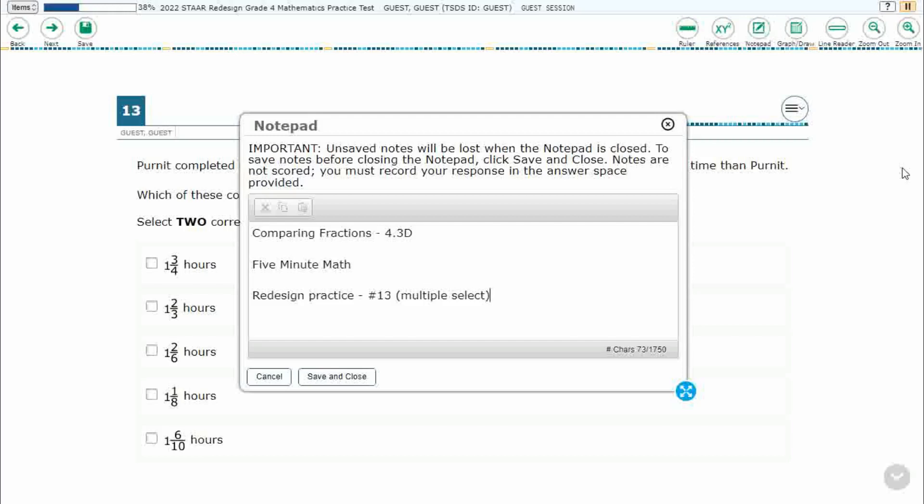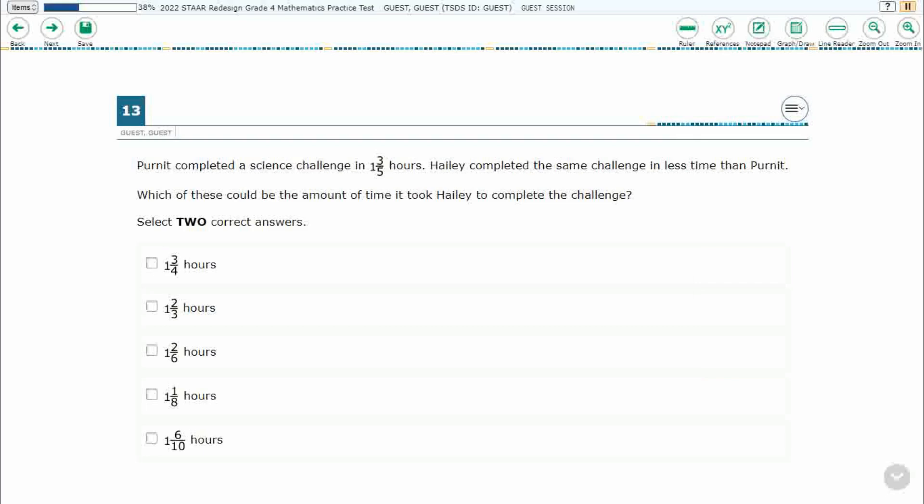This is 4.3D in the great state of Texas and we are using item number 13 which is a new item type multiple select of the redesign practice online STAR test. If you haven't done so already please go ahead and take a moment to pause the video, work this problem out on your own, unpause it and we will look at our answers together.